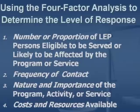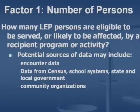The four factors are: first, the number or proportion of persons eligible to be served or likely to be affected by a program or service; second, the frequency of contact — how often you encounter someone who is limited English proficient; third, the nature and importance of the program, activity, or service; and fourth, the cost and resources available.